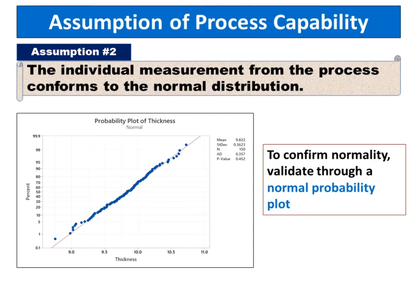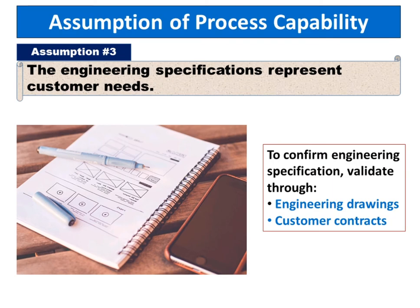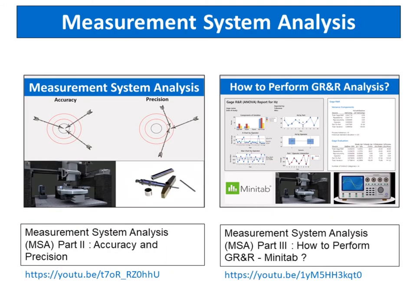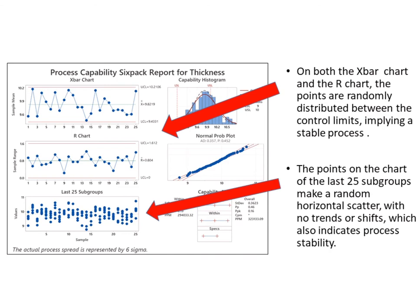The second assumption is that the individual measurements from the process conform to the normal distribution. To confirm normality, validate through a normal probability plot. The third assumption is that the engineering specifications represent customer needs. To confirm, validate through engineering drawings and customer contracts. The last assumption is that measurement variation is relatively small. To confirm, validate through MSA — measurement system analysis study. To understand more about measurement system analysis, you can watch my two videos about accuracy and precision and how to perform GR&R using Minitab software.